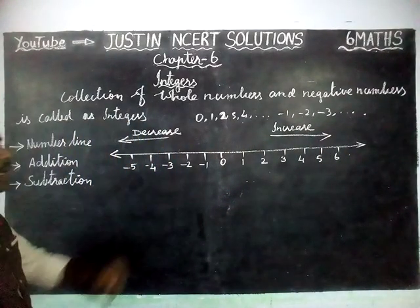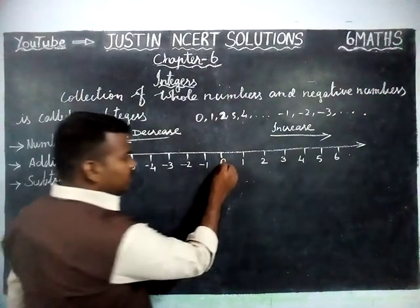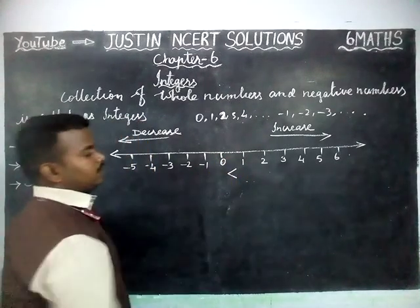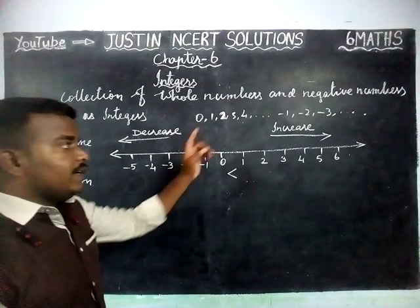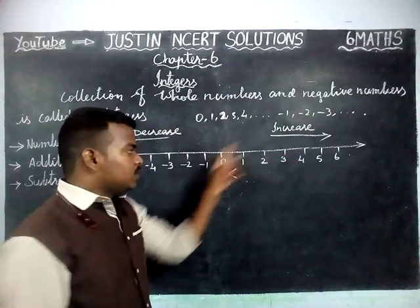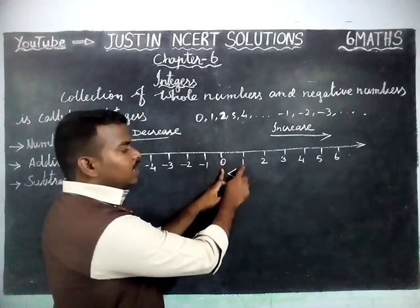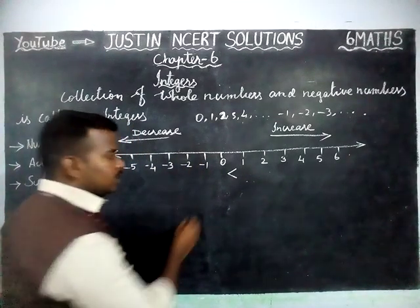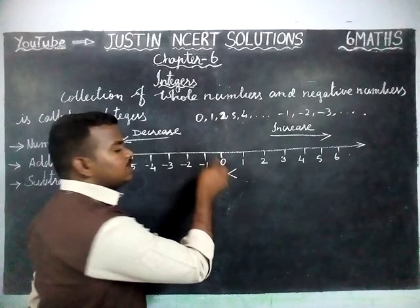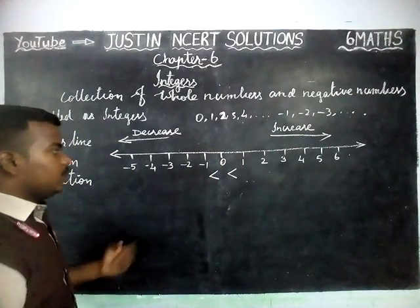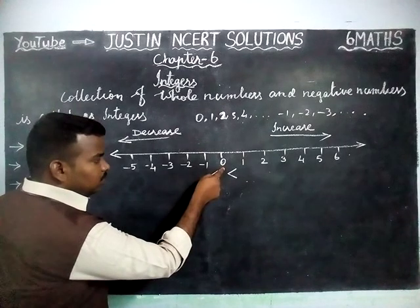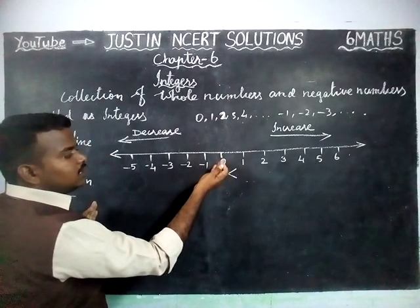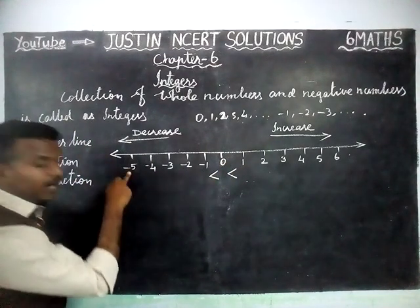Now we will compare numbers. When comparing 0 and 1, 0 is the smaller number — it is on the left-hand side. When comparing 0 and minus 1, minus 1 is less than 0. Similarly for minus 5 and 0: 0 is on the right-hand side, so 0 is the greatest number when comparing with minus 5.